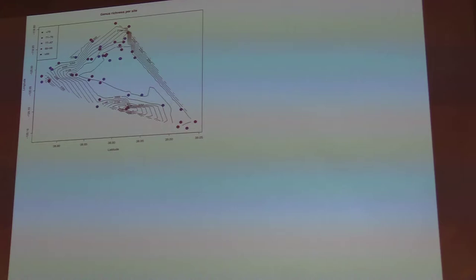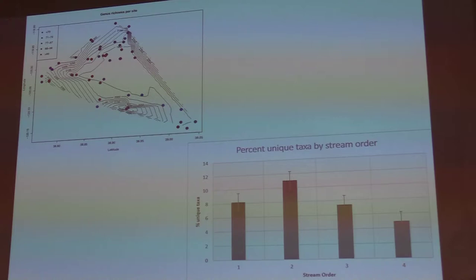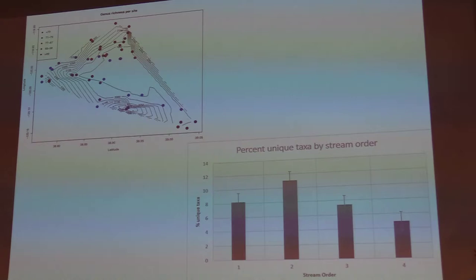Here's a snapshot of richness on an elevational contour plot — redder colors indicate higher richness, bluer colors lower richness — showing some interesting patterns in South Lake Tahoe. I'm also looking at percent endemism by stream order, and there is some endemism expressed in this catchment. But what's driving these patterns? That's what I'm really curious about.